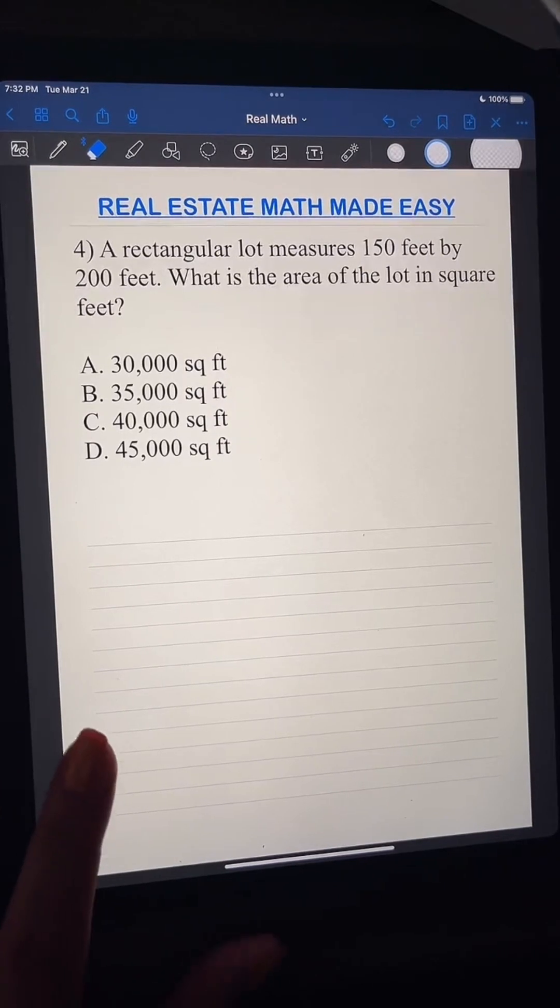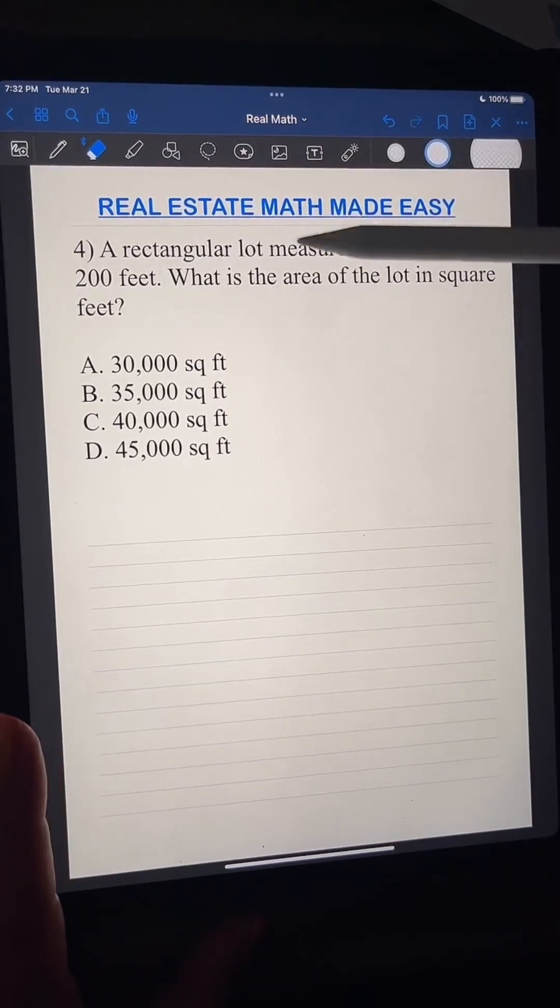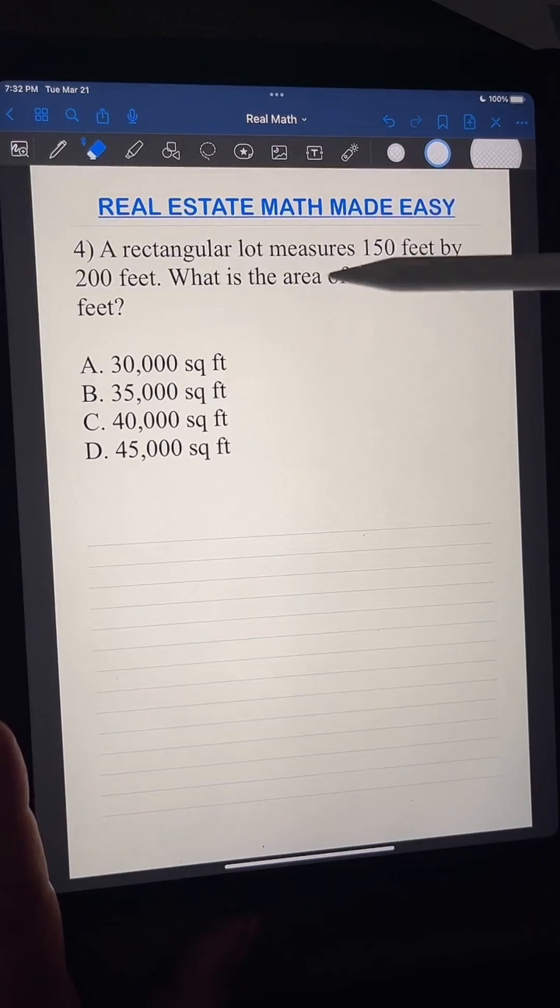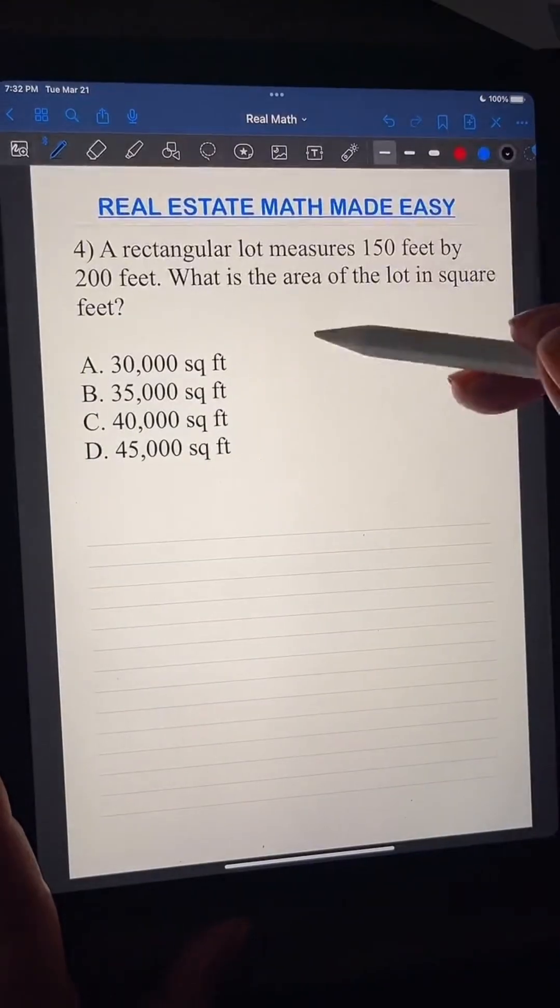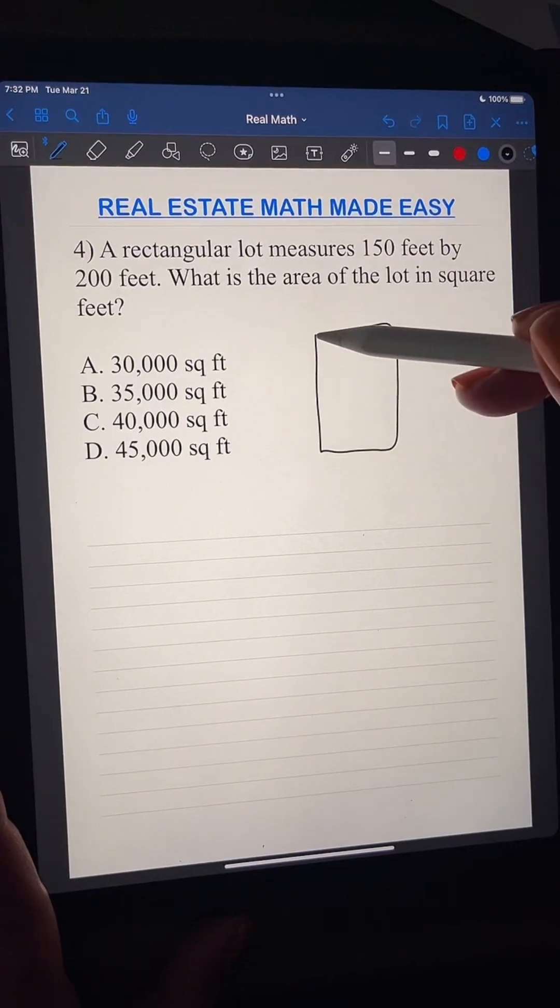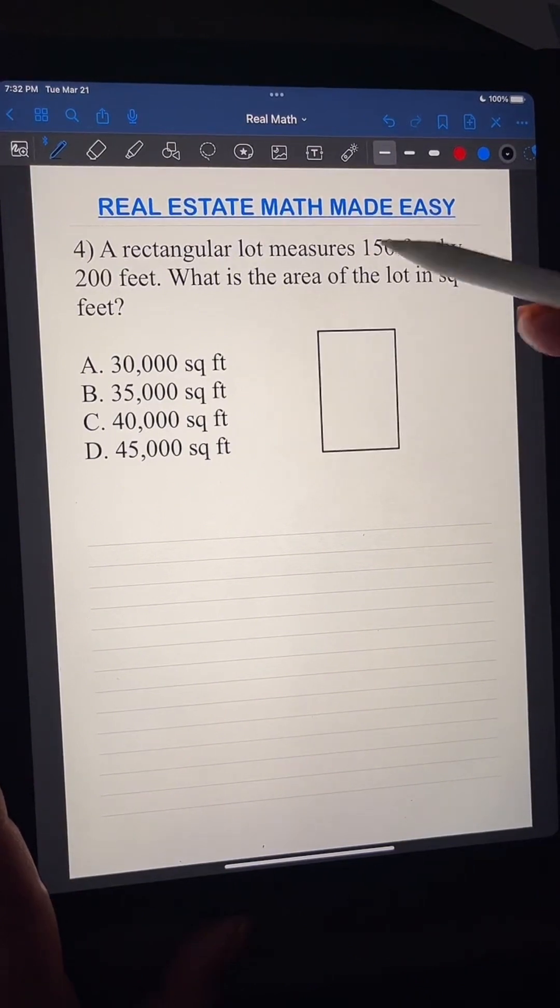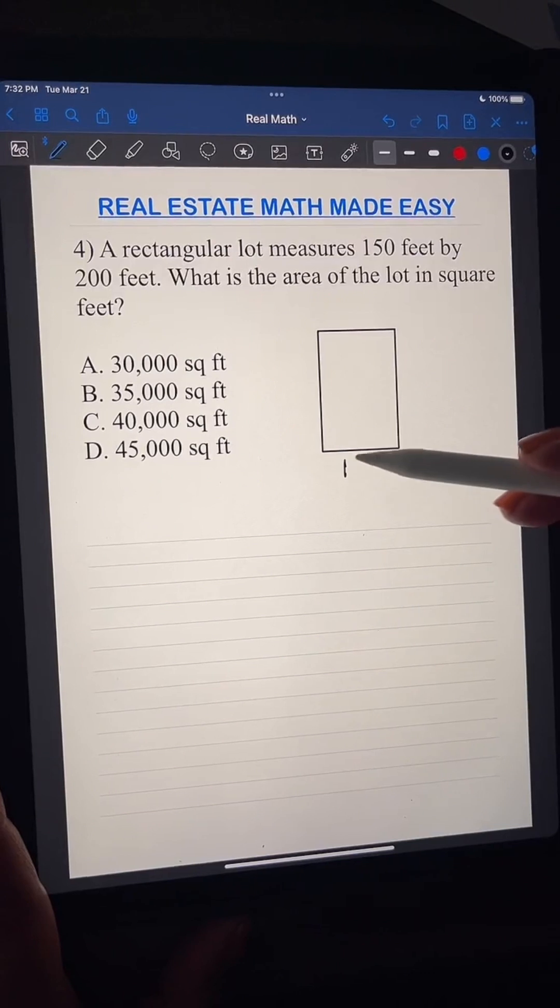All right, so we have this next problem. It says a rectangular lot measures 150 feet by 200 feet. What is the area of the lot in square feet? Okay, so remember, we have a rectangular lot. I'm going to draw my lot. I'm going to draw my lot. And then it's going to measure 150 feet by 200 feet.